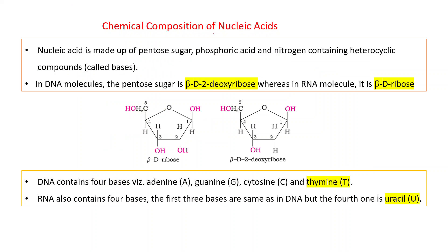Chemical composition of nucleic acids: a nucleic acid is made up of pentose sugar, phosphoric acid, and nitrogen-containing heterocyclic compounds called bases. So three components are there: pentose sugar, phosphoric acid, and these bases.